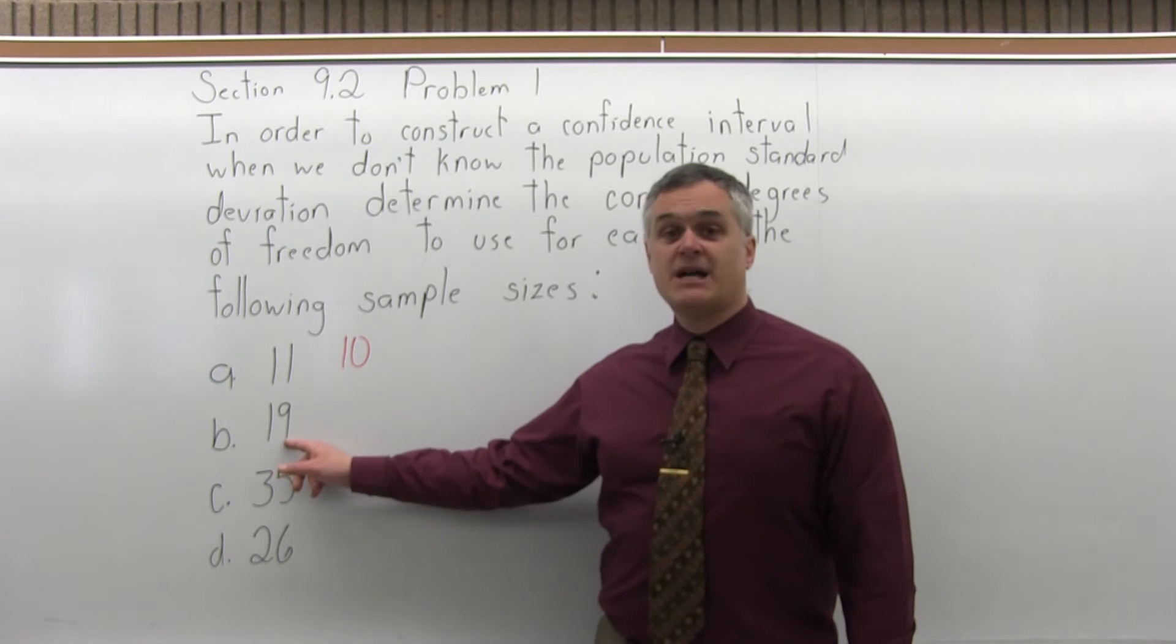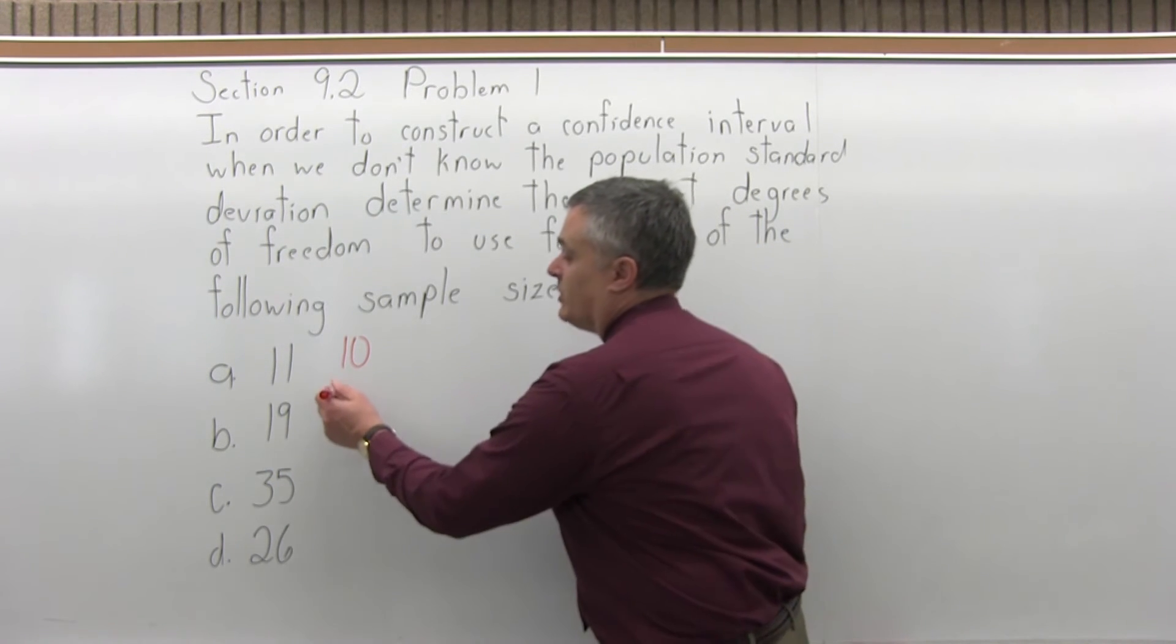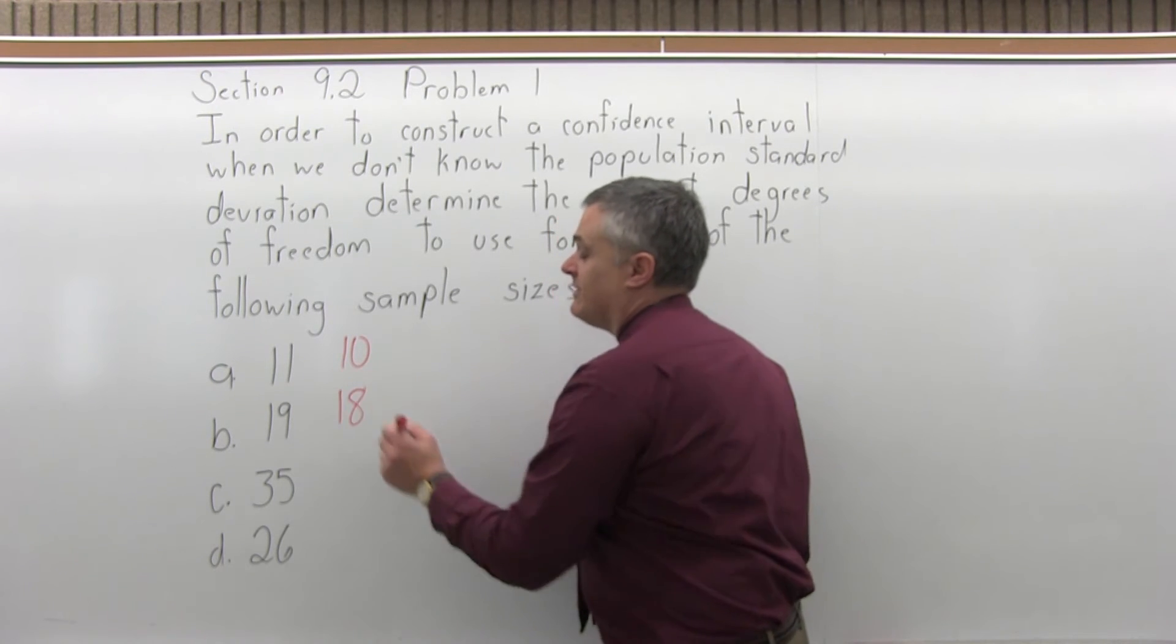Part B, if the sample size is 19, the number of degrees of freedom would be one less. It would be 18.